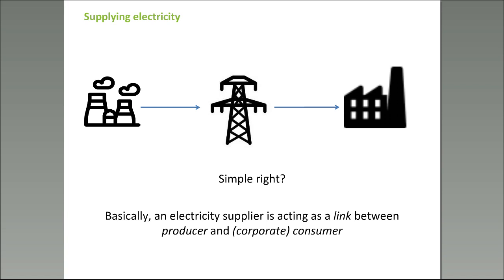First of all, let's think about what it is to supply electricity. We know it's very complicated, but the basics are quite simple. You find a production facility — let's say a coal-fired electricity plant on the left of the slide. You connect it to the grid, and then the grid will pass on the production of the coal plant to the consumer. The electricity supplier is just acting as a link between the producer of electricity and the consumer.